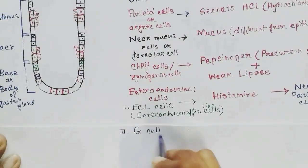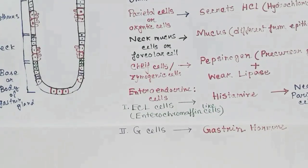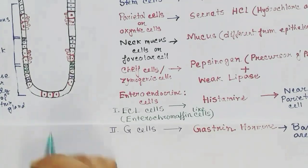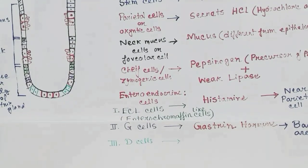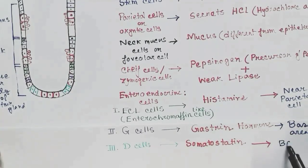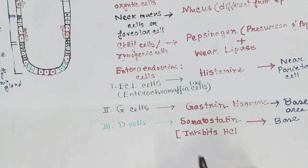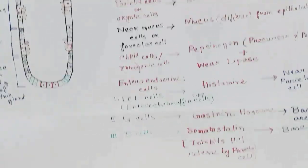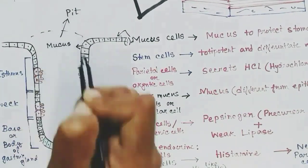The next enteroendocrine cell is the G cell. G cells release gastrin, a hormone mainly released into the bloodstream, but it also stimulates the parietal cells to release HCl. G cells are found in the base region. The next cell is the D cell, which releases somatostatin hormone. Somatostatin inhibits the parietal cells from releasing HCl. D cells are also found in the base region. Additionally, the vagus nerve stimulates the parietal cells to release HCl when we eat food.